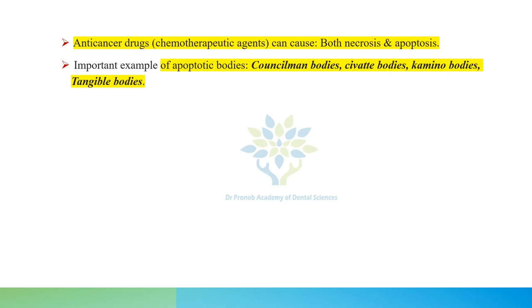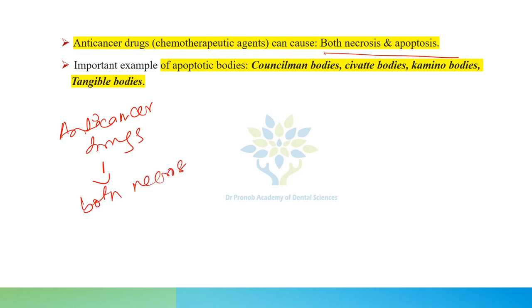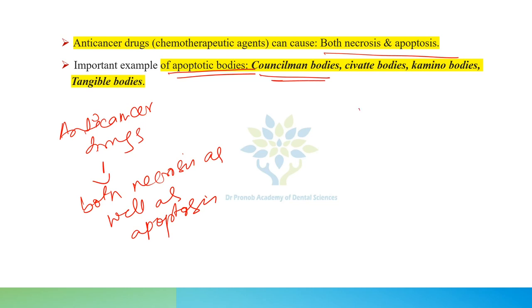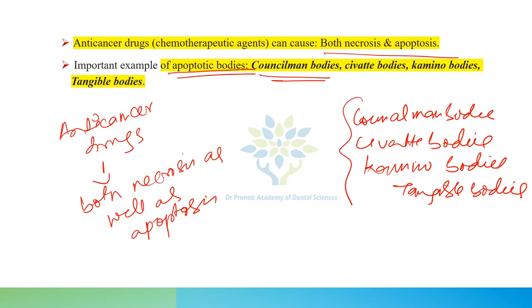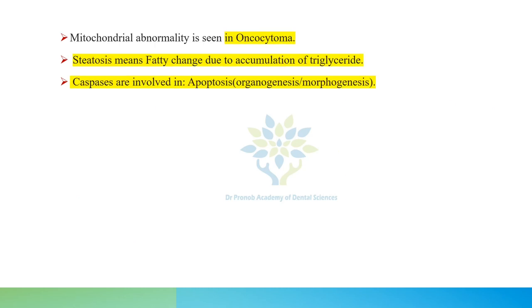Anti-cancer drugs can cause both necrosis and apoptosis. Important examples of apoptotic bodies are: Councilman bodies, Civatte bodies, Kamino bodies, and Tangible bodies.